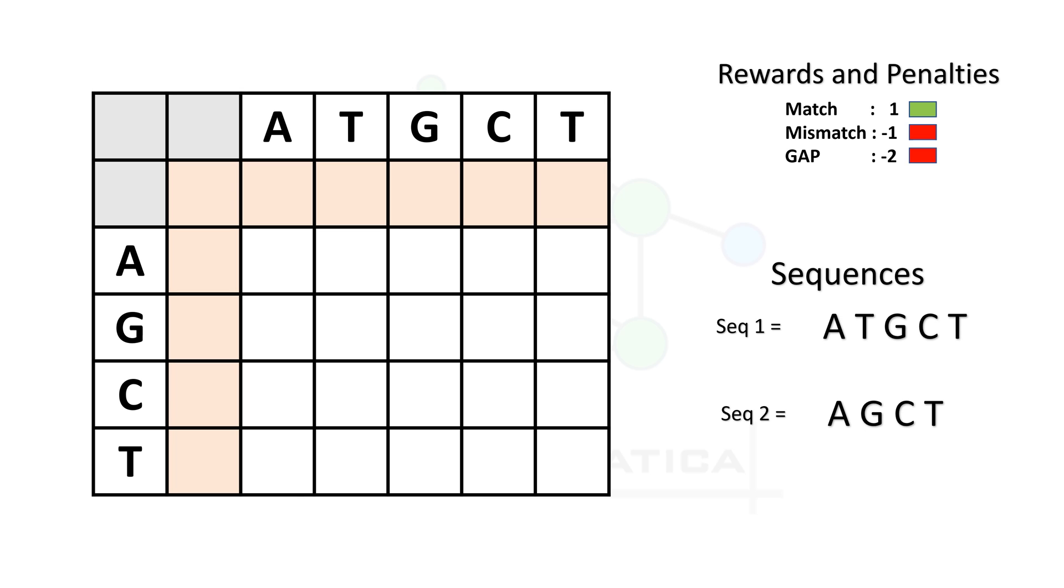First, we will create a matrix of N plus 1 by M plus 1 size, where M is the length of the first sequence and 1 is for the first blank column, and N is the length of the second sequence and 1 is for the first row. After creating the blank matrix, now we are ready for the first step, the initialization step. In the initialization step, we will fill the first row and first column with progressive gap penalties. We start with 0, and as we proceed rightward in the row, we add gap penalties in each step.